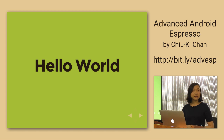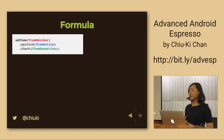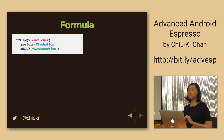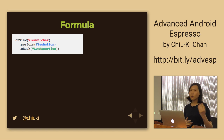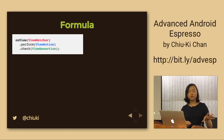I'm going to go through a hello world example to understand the basic structure of Espresso before diving into more advanced examples. This is the basic formula: onView takes a view matcher — for example, withId — telling Espresso which view to look at or act on. Once you've located the view, you can either perform a view action (click, swipe, type text) or check certain conditions with a view assertion.